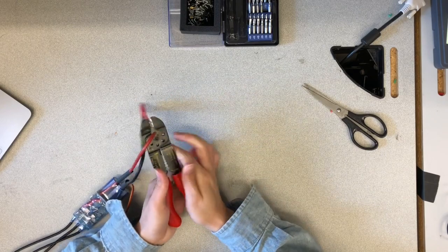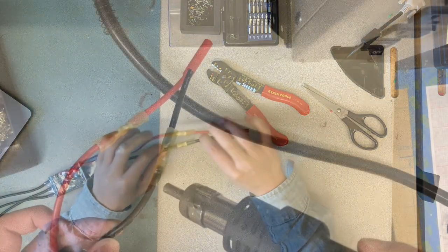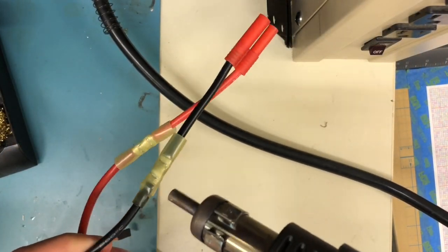Use the crimping tool again and secure the connection by crimping hard on the solderless heat shrink. Repeat the process on both of the wires until it is done.